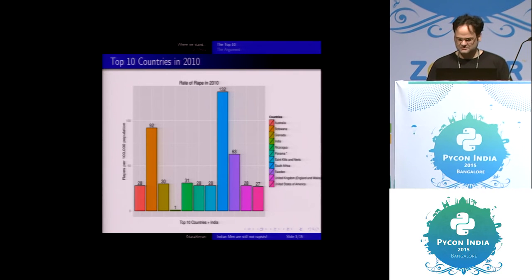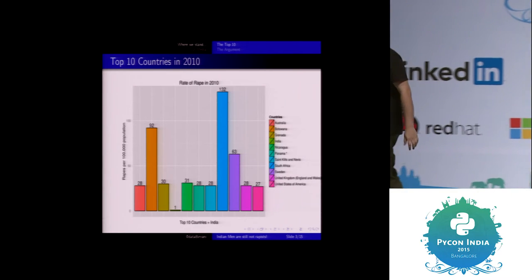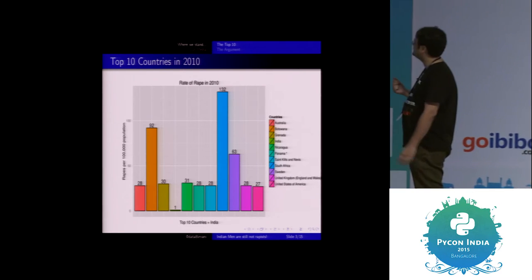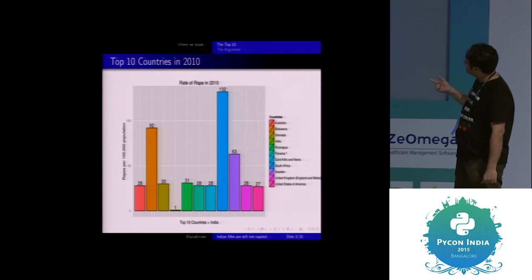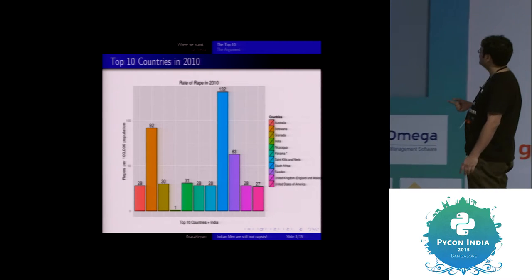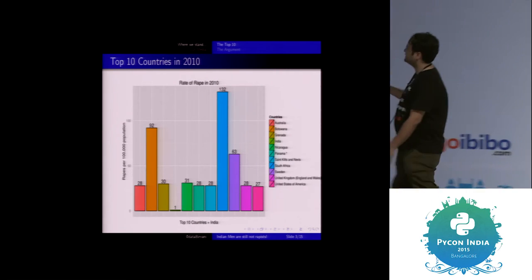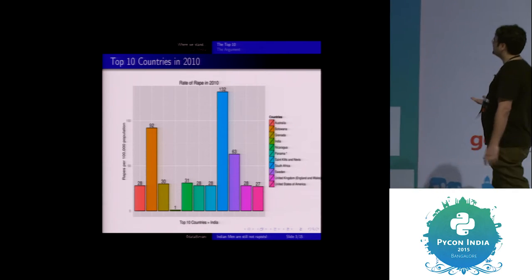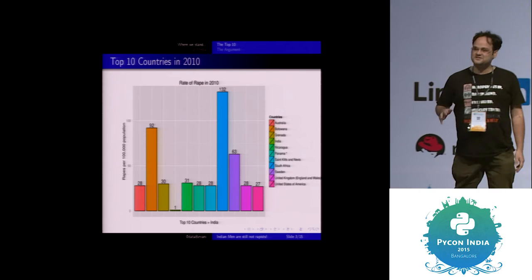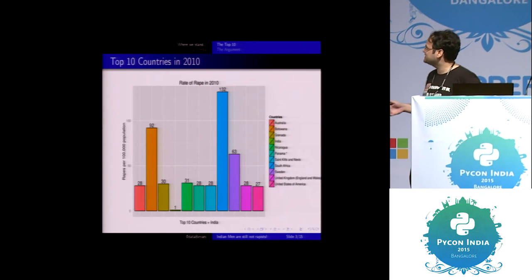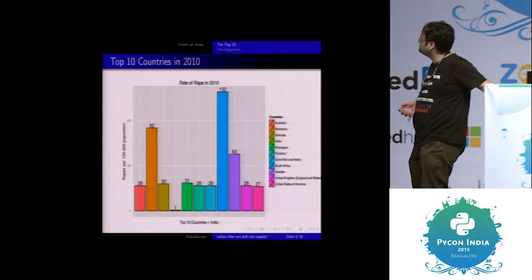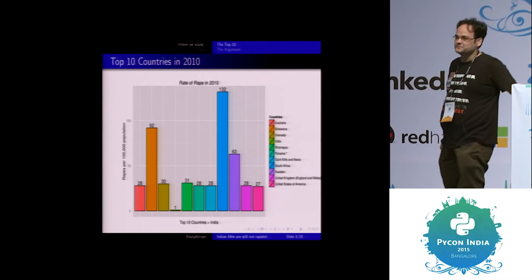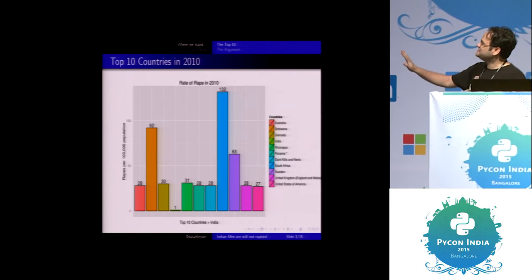So these are the top 10 countries. If you look at the rate of rape in 2010, that is the number of rapes per 1 lakh population. And if you look at the top, so this one here, that is just India. And if you look at the top countries, those are Australia, US, UK. And it's not just limited to first world countries. There are Botswana and Nikahagawa and other countries like that too. We are no way near the top.